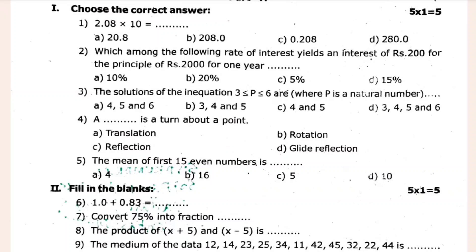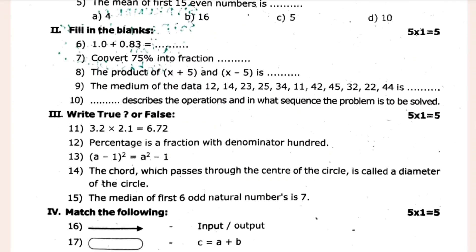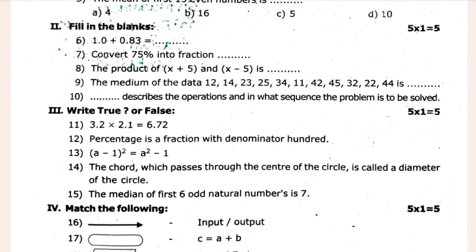Let's see: 1.0 plus 0.83 is equal to 8. I think it's 1.83 as the answer. So let's see — convert 75% into a fraction.